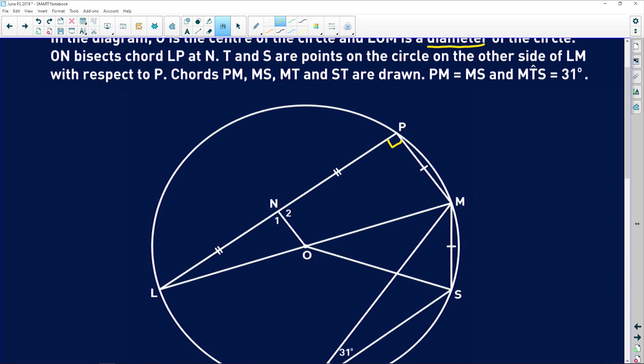Then it says that ON bisects chord LP at N. Another very important point. If this is the center and we have a line going from the center to a chord and it bisects the chord, what does it do? It has 90 degrees. Because, remember, a line from center to the middle of a chord bisects the chord. We also know that this is a radius and that is a radius. So those two lines are equal.